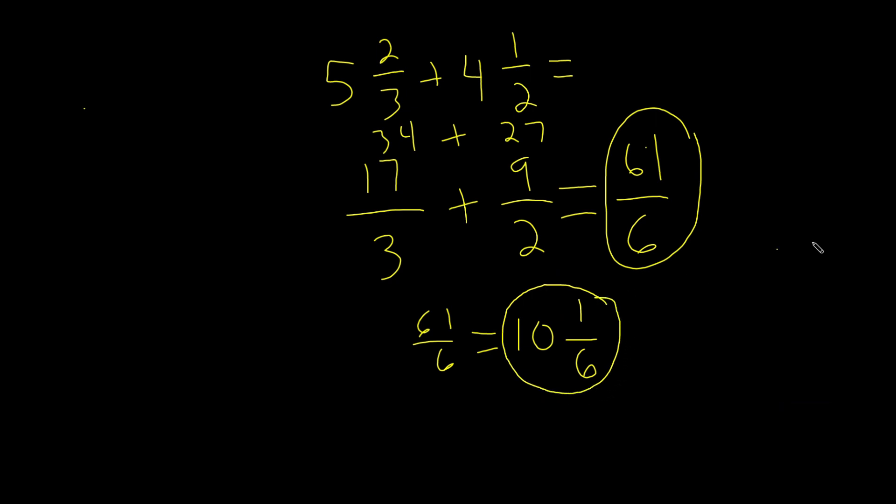Now let's do another problem. 4 and 1 thirds plus 3 and 3 fourths. Remember, our first step is to convert these two into improper fractions. So let's convert 4 and 1 thirds into an improper fraction first.